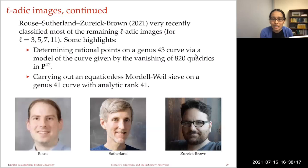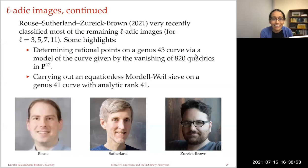Very recently — just about a month ago — a paper of Rouse, Sutherland, and Zureick-Brown classified most of the remaining l-adic images for l = 3, 5, 7, and 11, with a number of spectacular Diophantine achievements. They determined rational points on a genus 43 curve whose model is given by the vanishing of 820 quadrics in 242 variables, and also carried out an essentially equation-free Chabauty argument on a genus 41 curve with analytic rank 41, which is quite impressive.